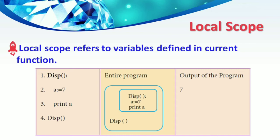Local scope is a characteristic of variables that makes them local — the variable name is only bound to its value within a scope which is not the global scope. A variable created inside a function belongs to the local scope of that function and can only be used inside that function. This means local scope refers to variables defined in the current function.